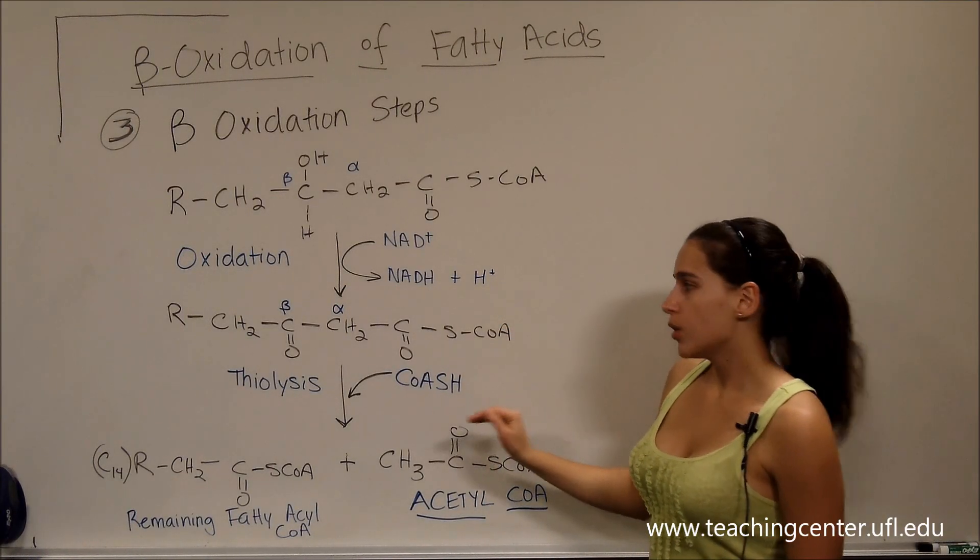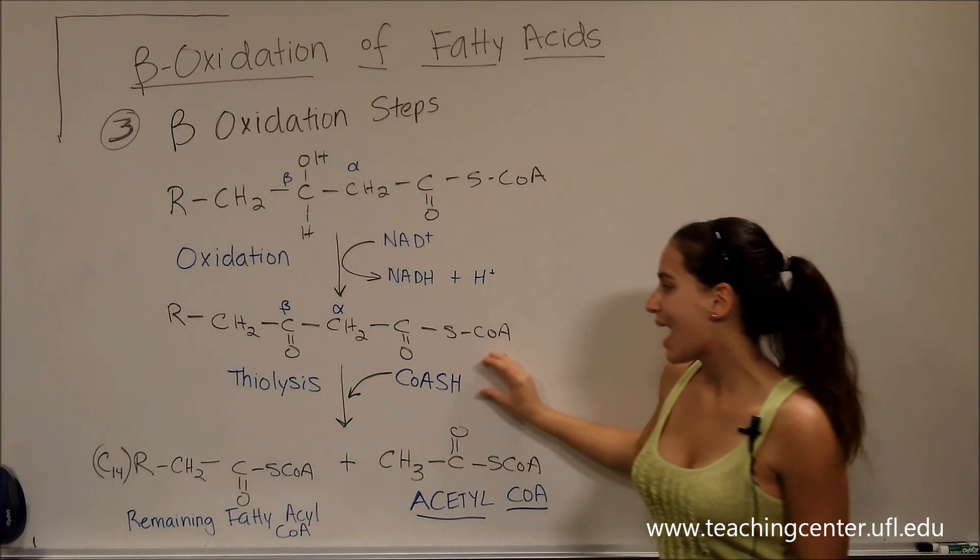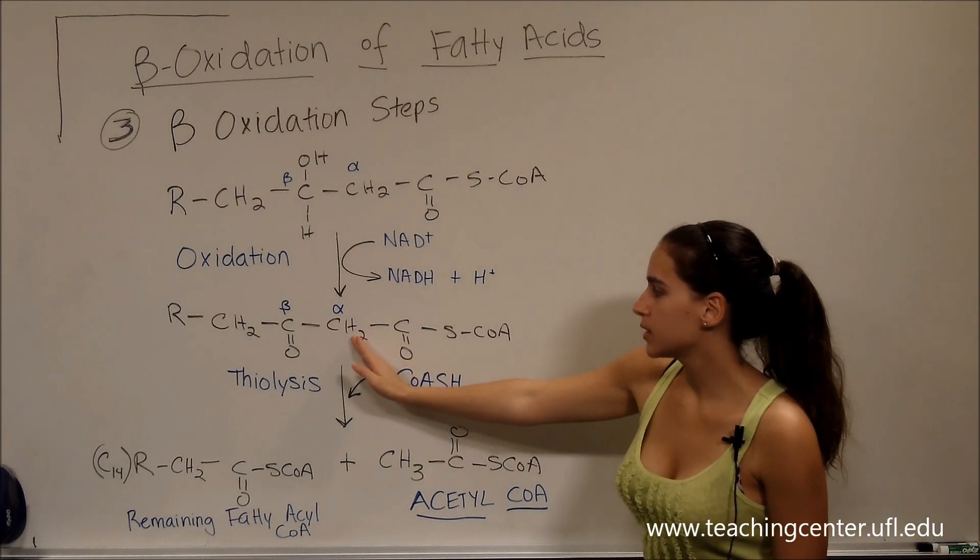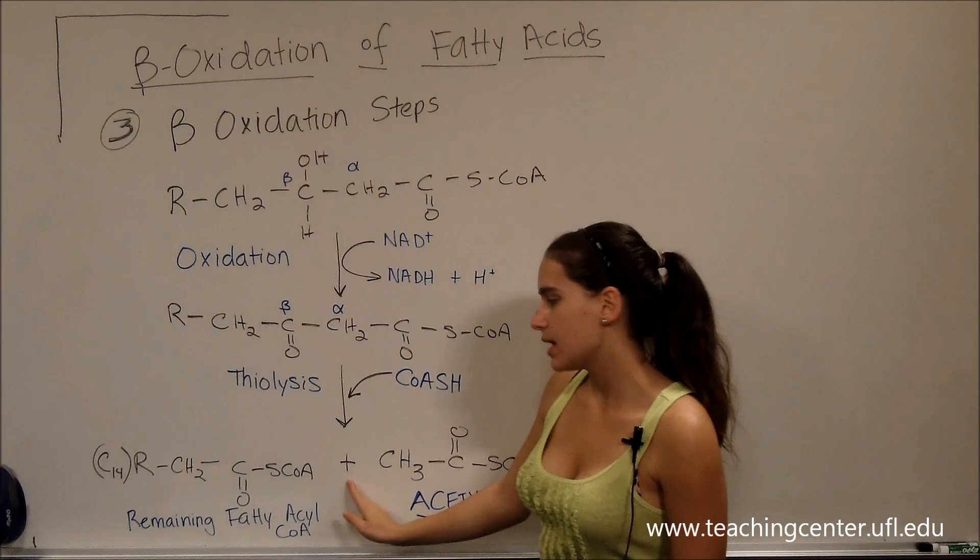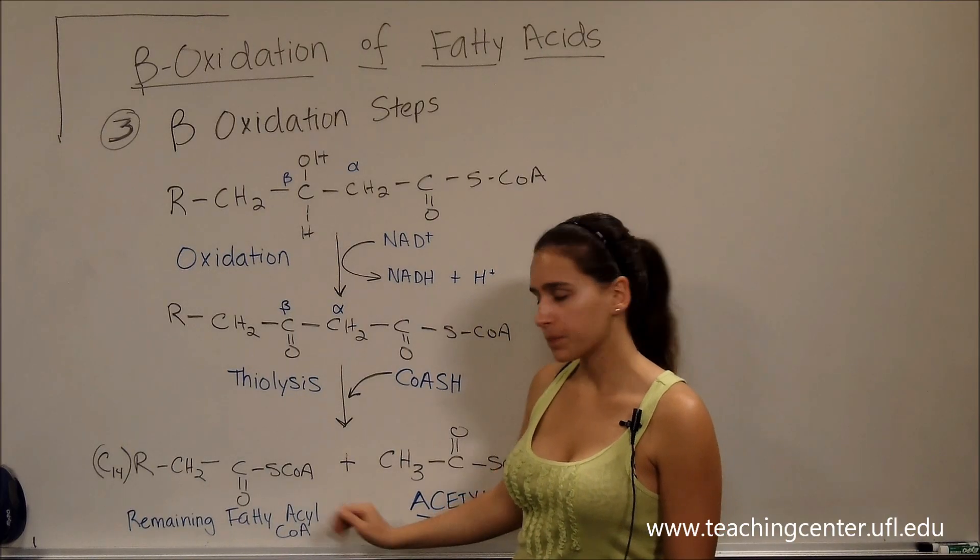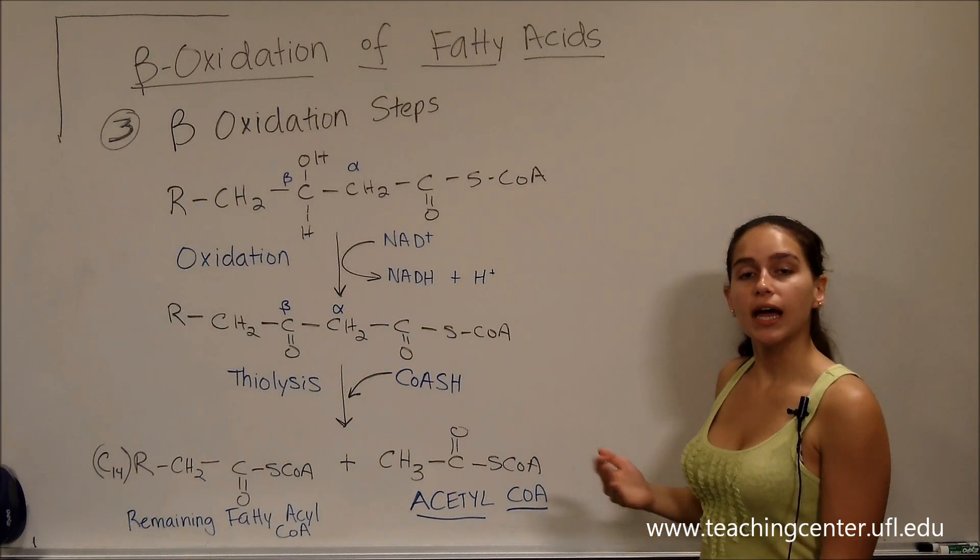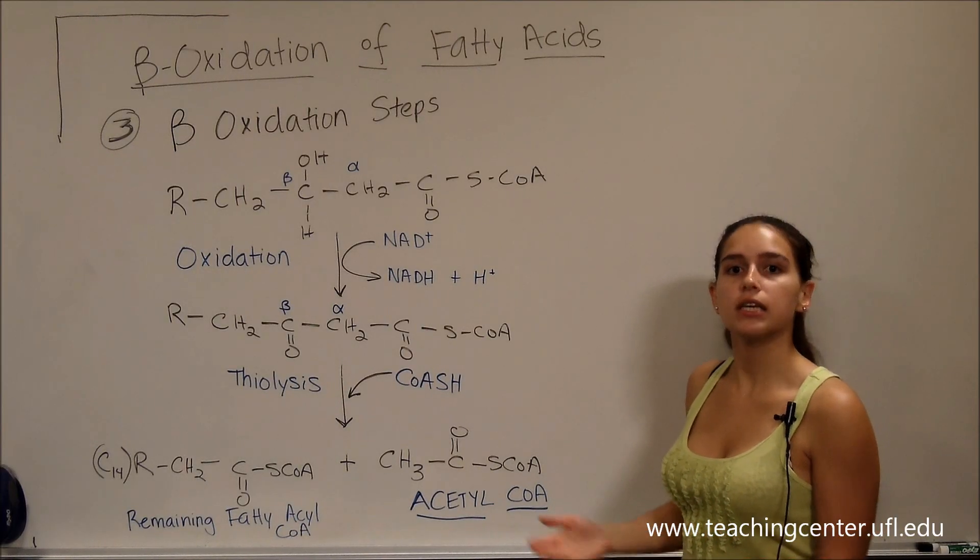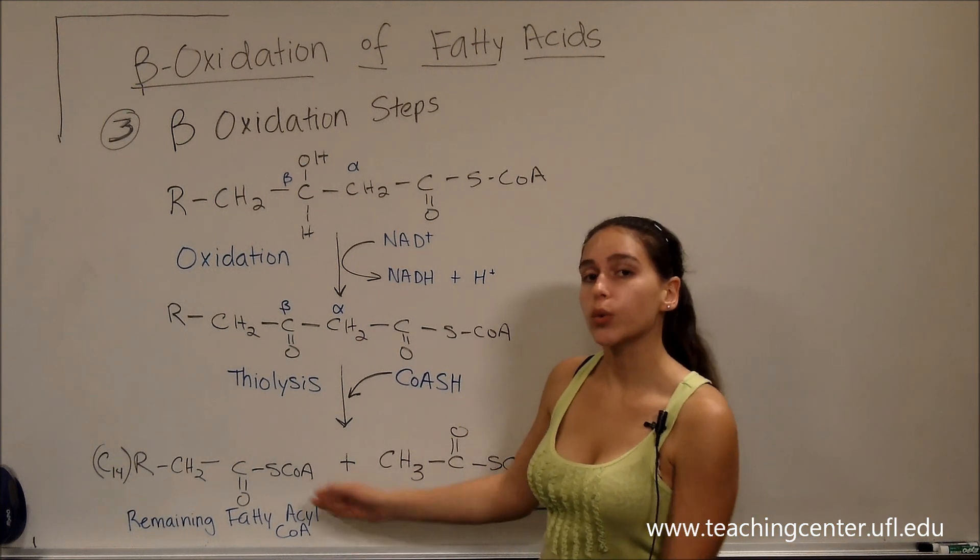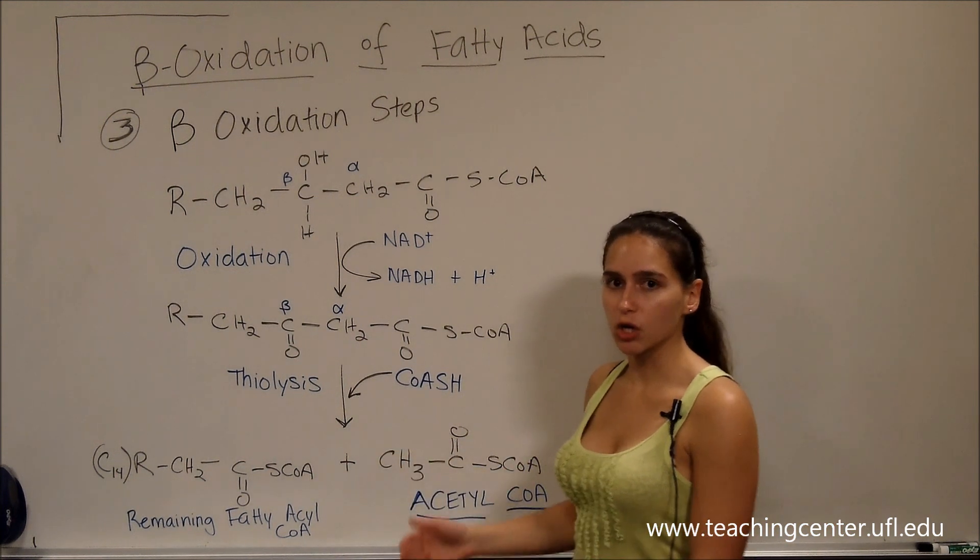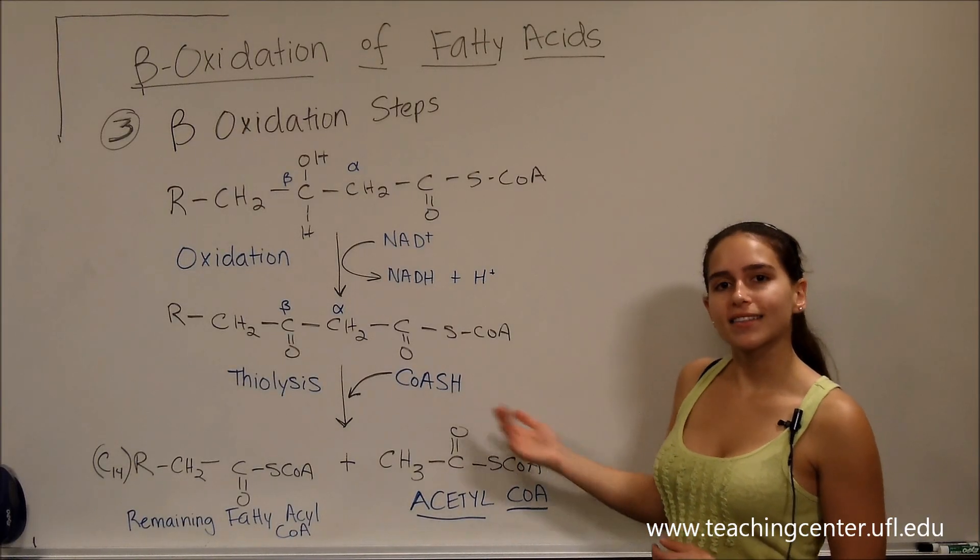After our oxidation, now we're going to undergo thiolysis. That means we're going to add a CoA to break apart that acetyl-CoA and have our remaining fatty acyl-CoA. We know that acetyl-CoA can go into the TCA cycle and yield, just like in glycolysis, yield energy. Our remaining fatty acyl-CoA, we're going to continue to break down into acetyl-CoA's, and I'm going to explain the energy yield in a second.